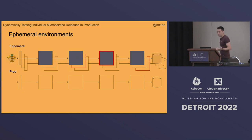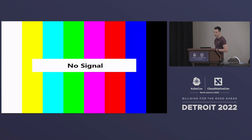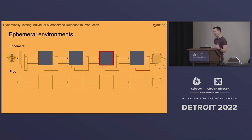To get around that we could have ephemeral environments — spin up a new environment for each service, even for each PR. But these are hard to build, expensive to run, and they're still not prod. Anybody who's ever built one of these knows they're always a lookalike of prod, but never really quite the same.